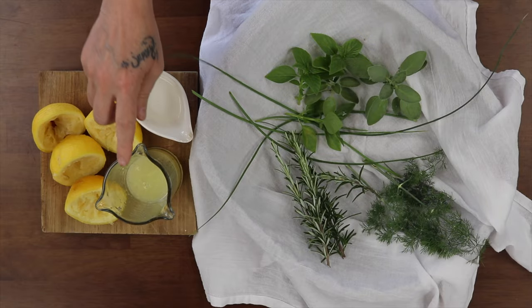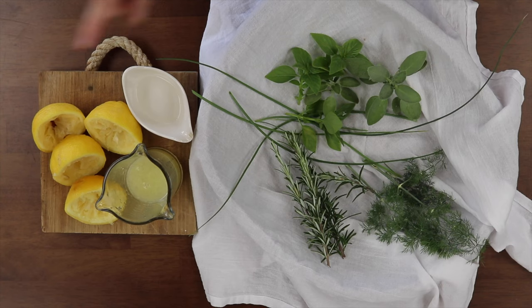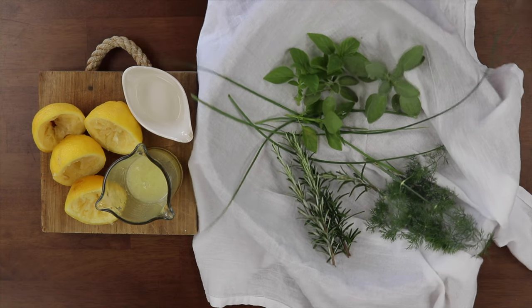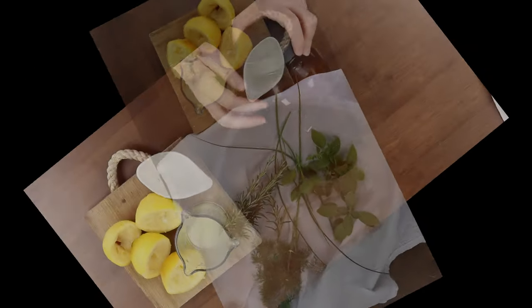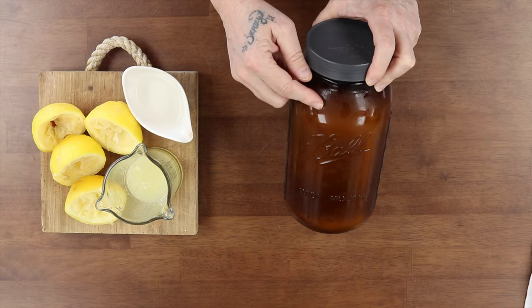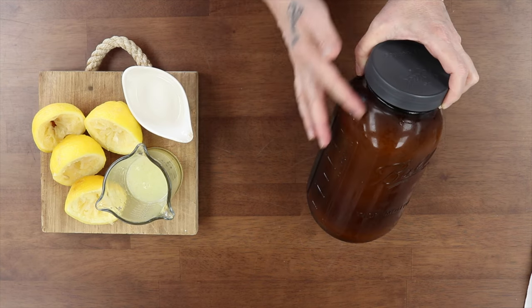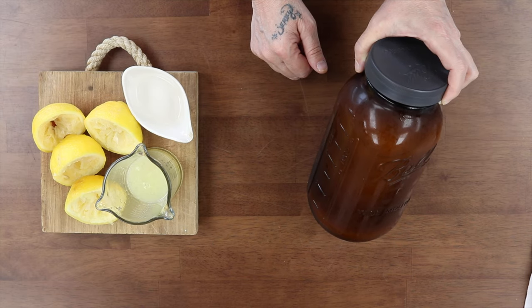For this first goat cheese recipe, very simple. You're going to use two fresh squeezed lemons, that's about a third cup, and two tablespoons of white vinegar. Second recipe we will be using citric acid in place of the vinegar and lemon juice. This is raw unpasteurized goat milk that I get locally at the farmers market. He fills it all the way to the top, so it's going to be a little bit more than four cups, maybe four and a quarter.